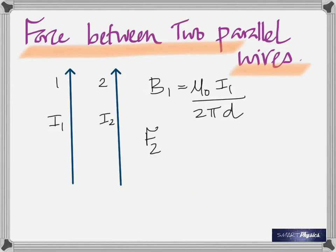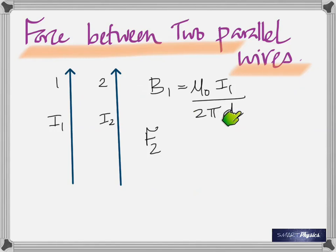The direction of B₁ at conductor two is into the plane of the board. Now conductor two is also carrying a current, and when a current-carrying conductor is kept in a magnetic field, a force acts on it. The formula for force on a current-carrying conductor in a magnetic field is F = BIL. So the force on conductor two equals B₁ times I₂ times its length.